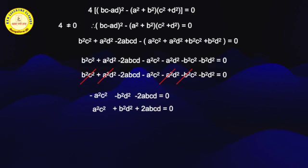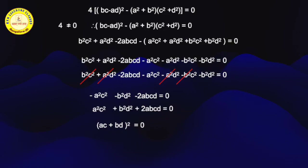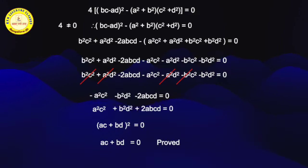When you see these three terms, it is a trinomial in the form of (a + b)². In the place of a we have ac, and in the place of b we have bd. Therefore, we can write this as (ac + bd)² = 0. So when (ac + bd)² = 0, then ac + bd = 0. That ends the proof of this particular problem. This is a 3-marks problem from the model question paper, for students who want to score more than 90%. Thank you.